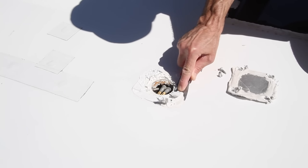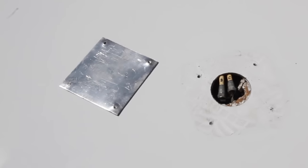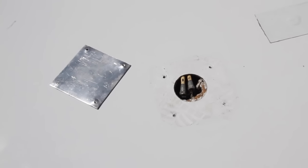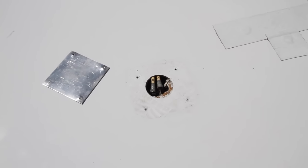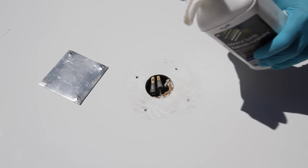After removing the plate, scrape away as much excess decor as you can. Using mineral spirits on a paper towel or rag, thoroughly clean all of the decor off the metal plate. We also want to use mineral spirits to clean the decor off the roof.